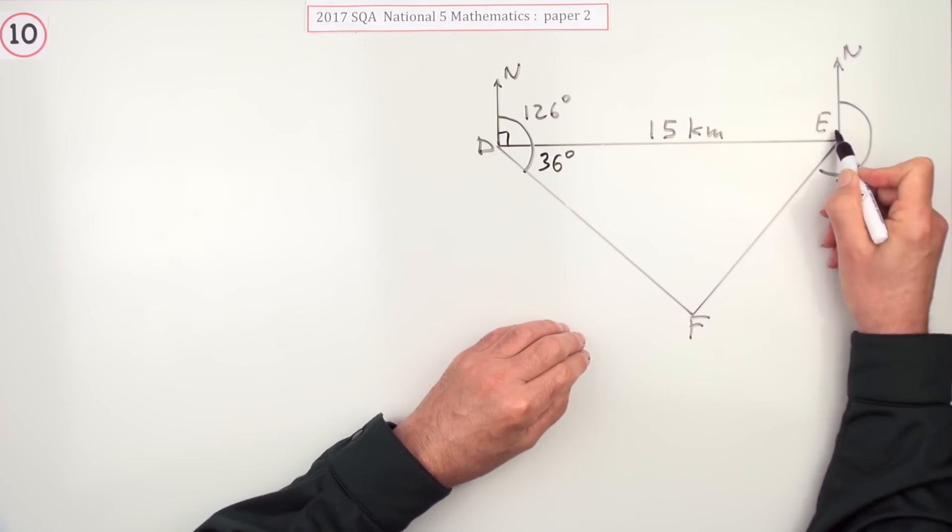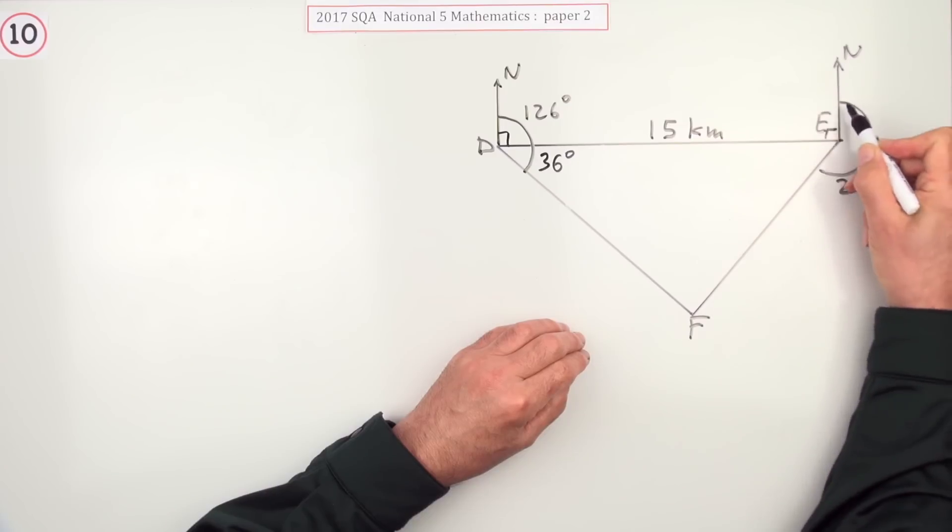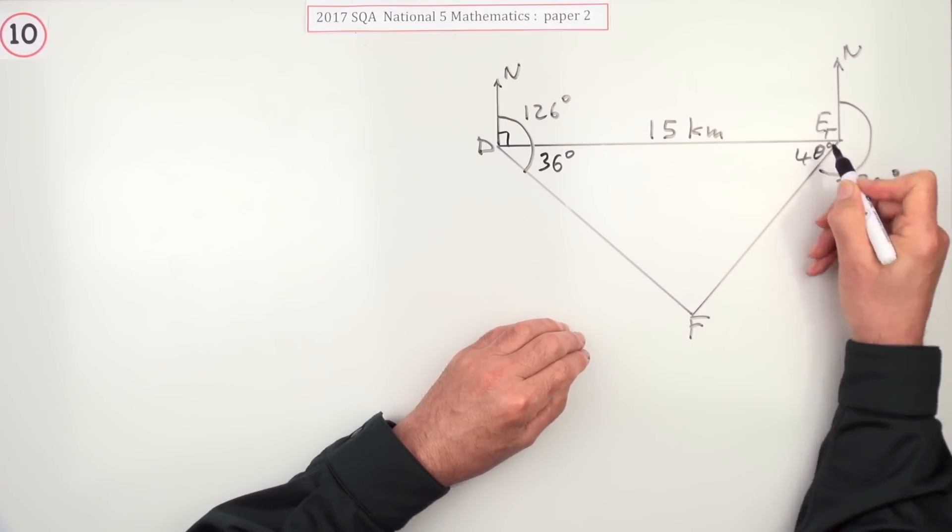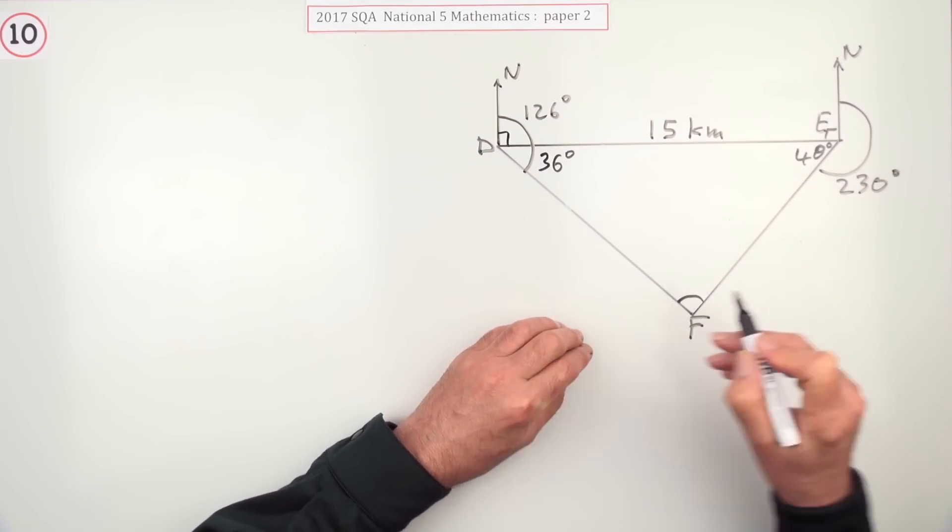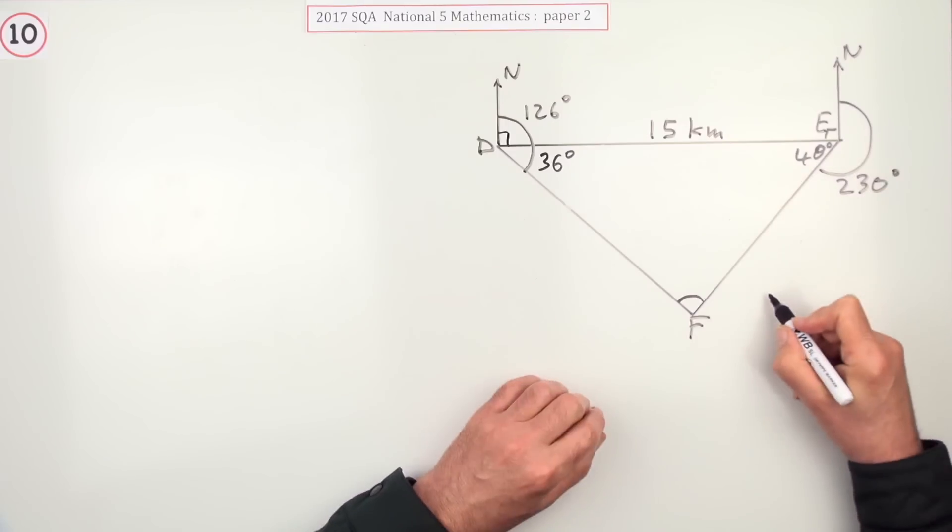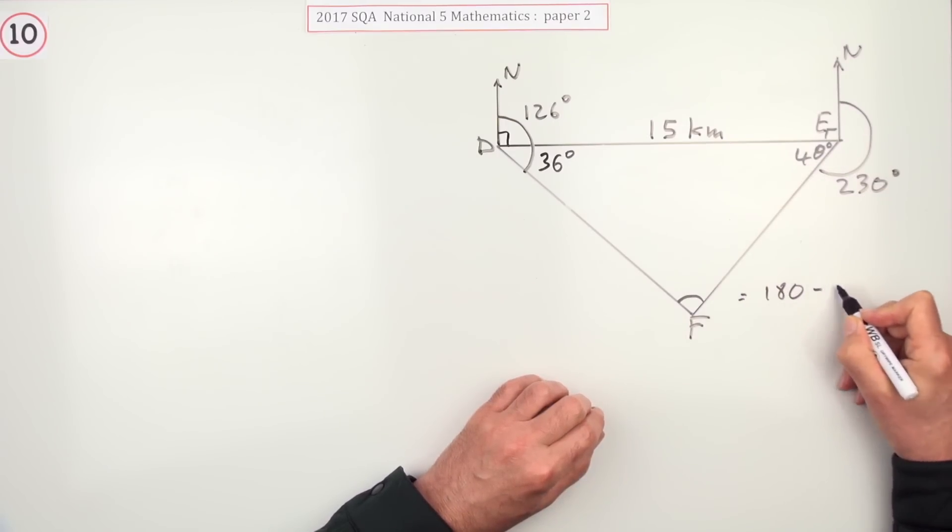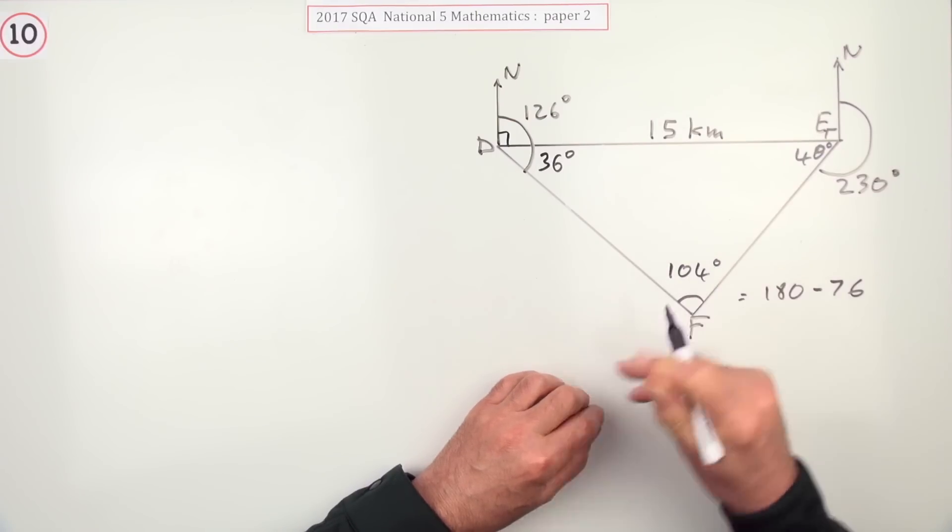Similarly here, if that's a right angle there should be 270 going round here. So if you've gone 230 so far, there's 40 in there. Whoops! Then once you know two angles, you know all three. So adding those together gives you 76, which means this angle in here will be 180 minus 76. So this angle in here is 104 degrees.